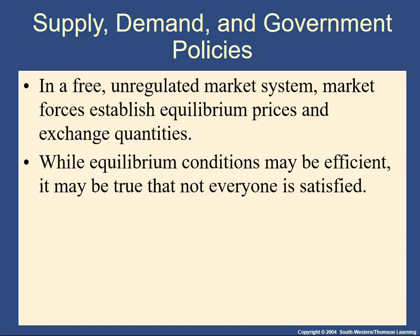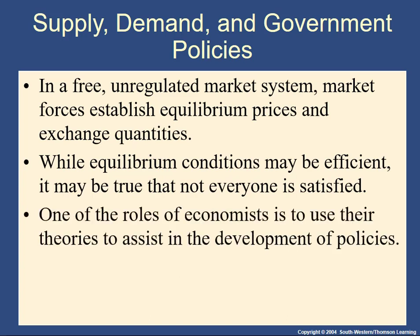What is it about the equilibrium that's objectionable? The primary objection is that policymakers have to grapple with the idea that in any system, there are going to be people that don't end up getting the good. That's what we call a rationing system — deciding who gets what in society. The price mechanism works such that if you're willing and able to pay the price, you get the good. But people may want the good and not be able to pay for it, so they don't get it. Oftentimes you hear people say that market outcomes are unfair.